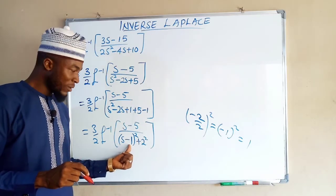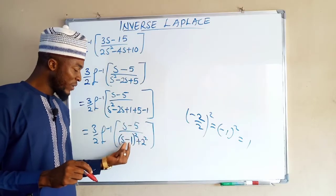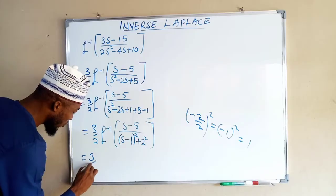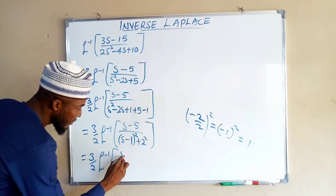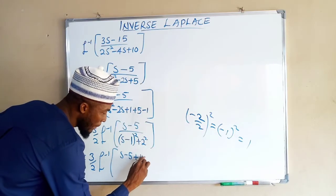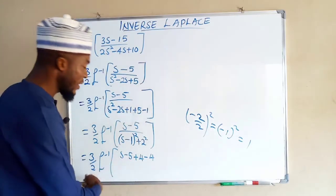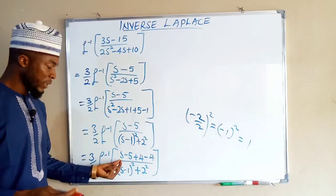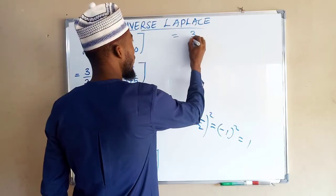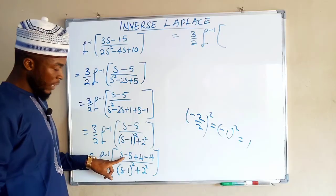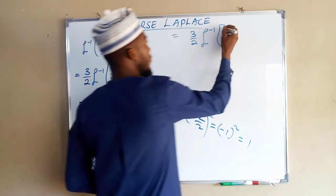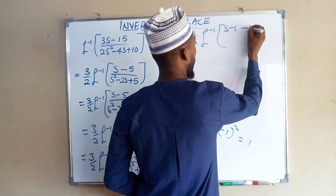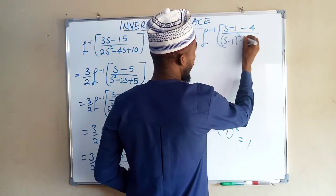Now we have s minus 1 in the denominator but s minus 5 in the numerator. We want the numerator in the form of s minus 1, so we add and subtract 4: writing s minus 5 as (s minus 5 plus 4) minus 4, which gives (s minus 1) minus 4. So this becomes (3/2) times the inverse Laplace transform of (s minus 1 minus 4) over (s minus 1)² plus 2².